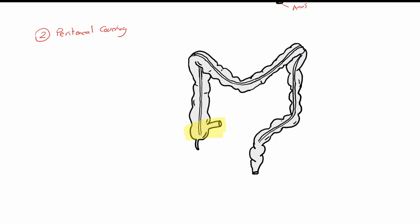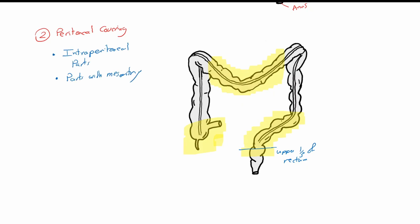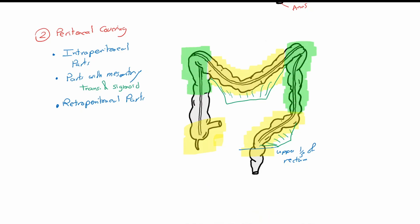The colon on average is about 150 cm long. The yellow shaded parts — which are the cecum, the transverse colon and the sigmoid colon — are intraperitoneal parts which have mesentery and are freely mobile. On the other hand, the ascending and the descending colon with the two flexures are considered retroperitoneal parts.